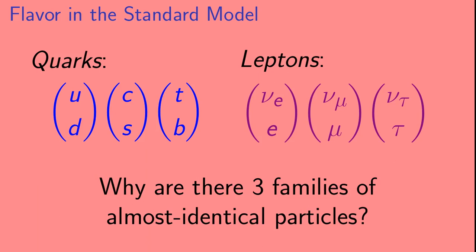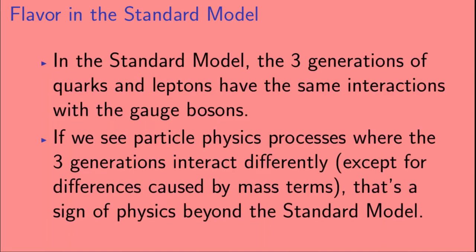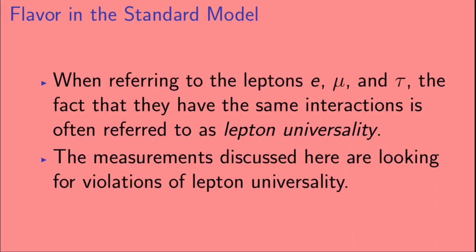Here's a question: why are there three families of almost identical particles? Well, we don't know — that's a question we'd really like to know the answer to. In the standard model, the three generations of quarks and leptons have the same interactions with the gauge bosons. If we see particle physics processes where the three generations interact differently — except for differences caused by mass terms — that's a sign of physics beyond the standard model. When referring to the leptons — electron, muon, and tau — the fact that they have the same interactions is often referred to as lepton universality. The measurements discussed here are looking for violations of lepton universality.